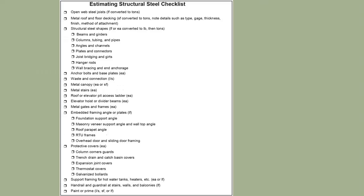Structural steel is different from reinforcement steel. The structural steel checklist includes: open web steel joist, metal roof, structural steel shaft, beam, girder, column, angle, channel, plate, connector, wall bracing, end anchorages, anchor bolt, base plate, waste and connection, metal canopy, metal stairs, roof and elevator pit access ladder, elevator hoist beam, metal gates and frames, embedded framing angle, protective covers, support framing, and water tank heaters — all to be painted or primed.